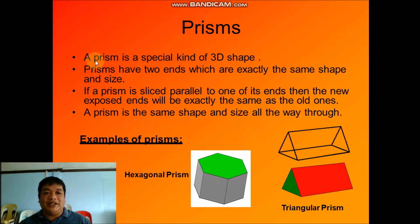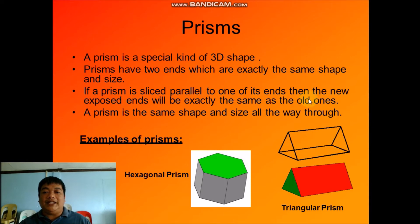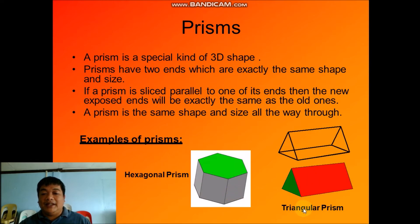Next, we have an example of a prism. What is a prism? A prism is a special kind of 3D shape or solid figure. Prisms have two ends which are exactly the same shape and size. If you slice one of its ends, the new exposed end will be exactly the same as the old one. A prism is the same shape and size all the way through.